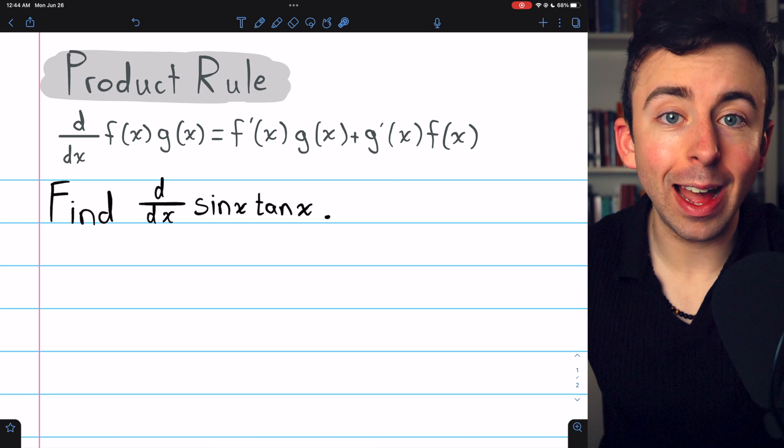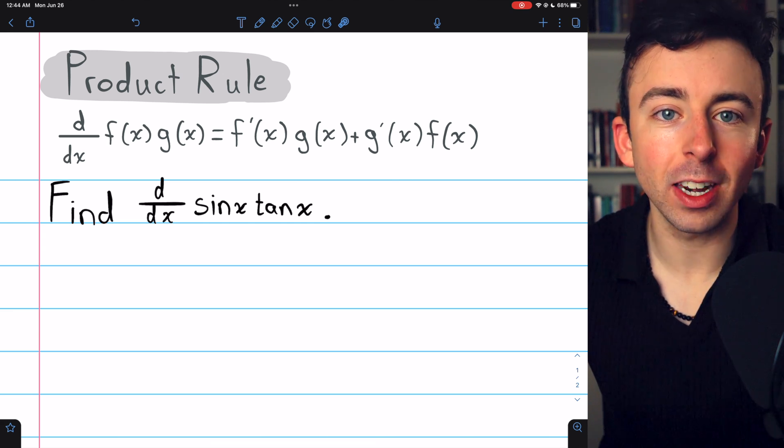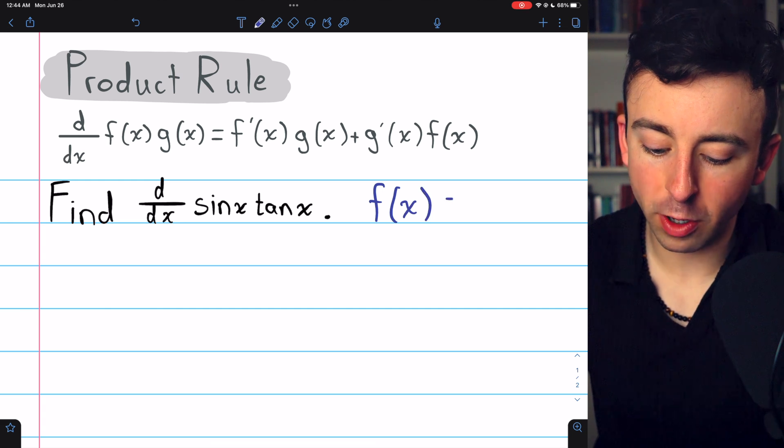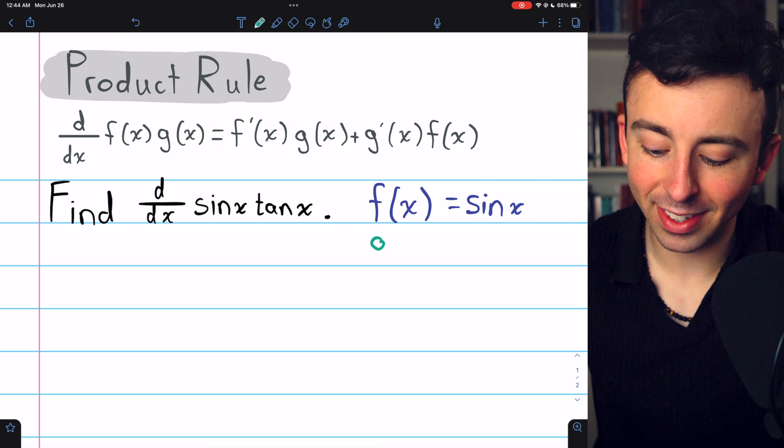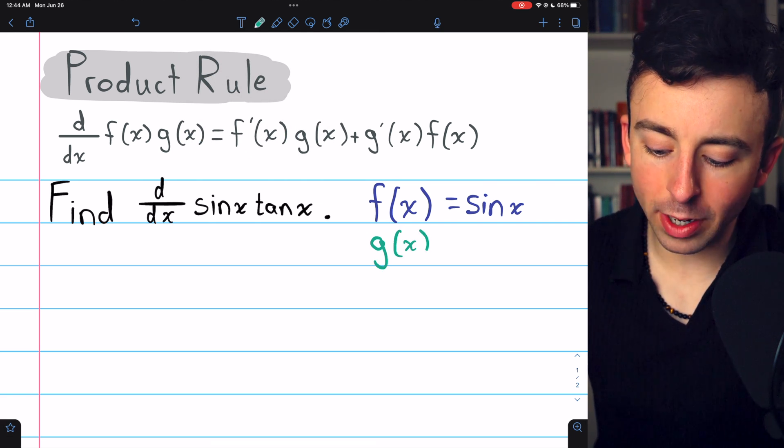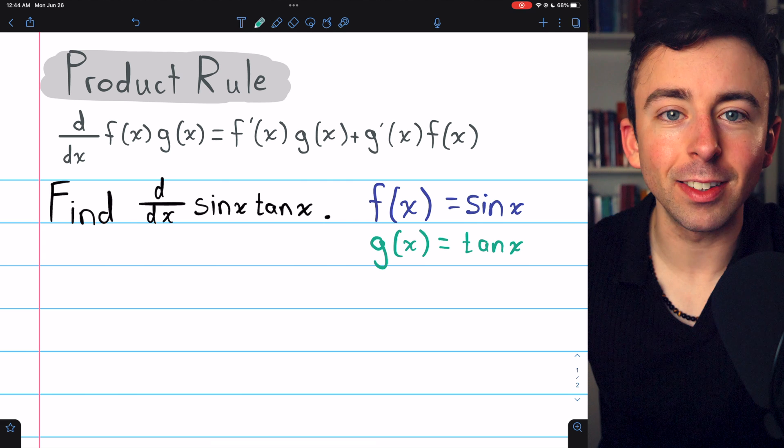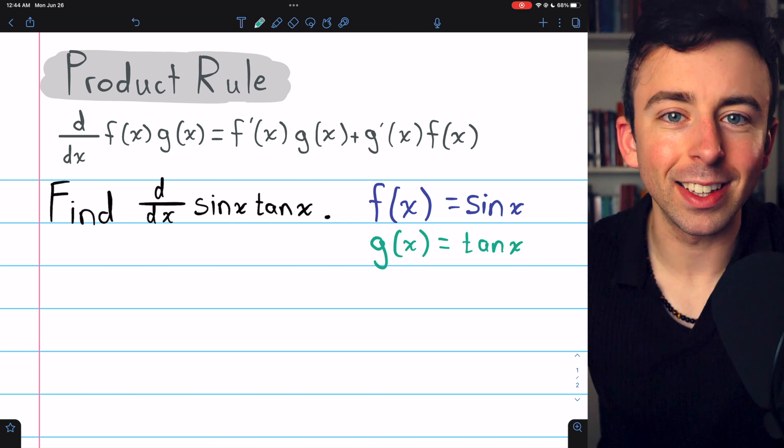So if we can identify our f and our g here, the two functions getting multiplied together, we can apply the product rule. That should be no trouble in this example. f(x), the function on the left, is sine x and g(x), the function on the right, is tangent of x. Which one is on the left and right doesn't actually matter because multiplication is commutative, but it's helpful to be consistent.